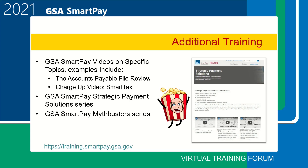These training videos are available in a brief, digestible format. We offer several different video series comprised of short videos on related topics. One example is the new GSA SmartPay Strategic Payment Solutions series, which highlights the different strategic solutions offered under the GSA SmartPay 3 Master Contract. We are continuing to expand additional training offerings by adding new videos, so check back often. New additional training videos will also be displayed on the GSA SmartPay homepage, so you will be aware of new releases as soon as you visit our website.